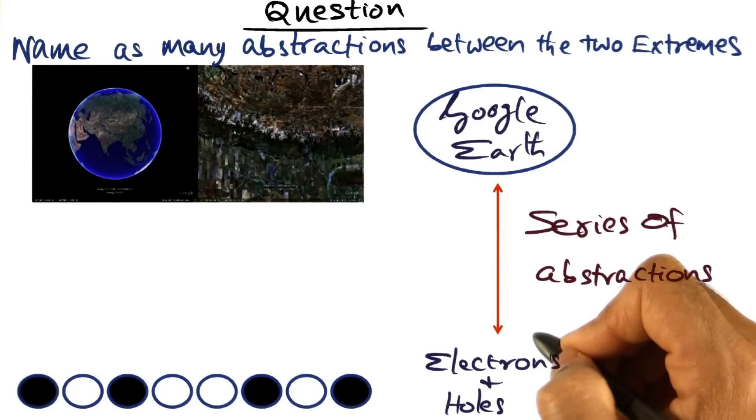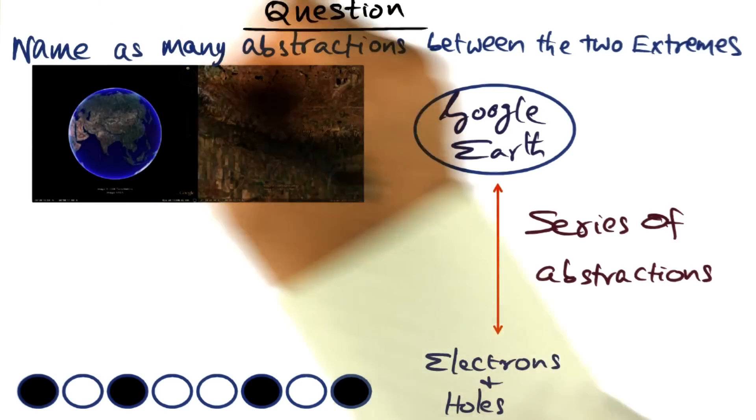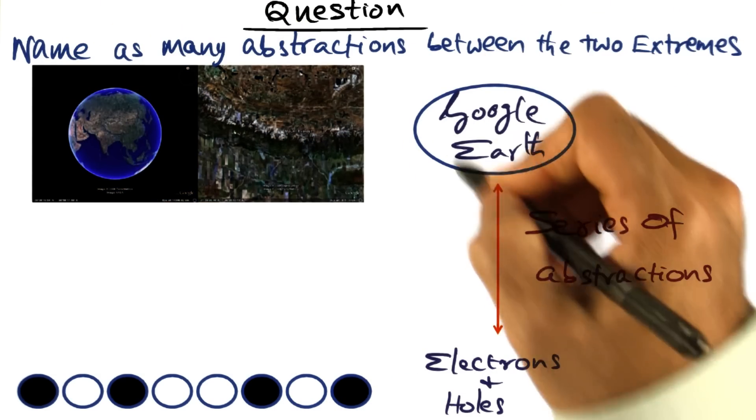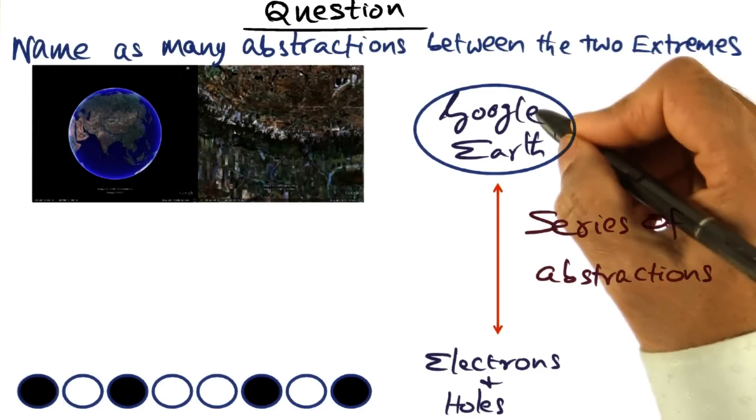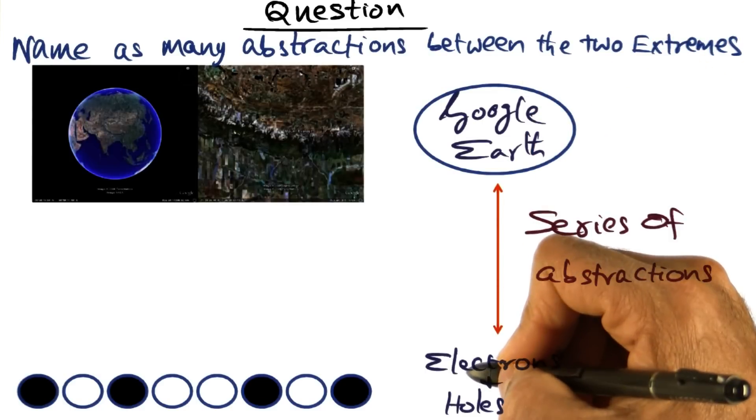What are all the abstractions that sit between these two extremes? What I want you to do in this quiz is to name as many abstractions as you can between these two extremes that I'm showing you.